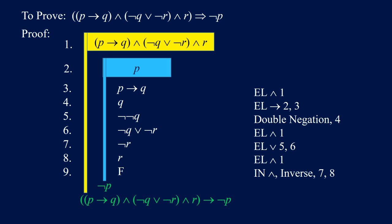We establish the original conclusion not P, indicated with 10, by applying negation introduction to 2 and 9. Finally we have reached our destination by applying introduction of implication to 1 and 10. Now we are done.